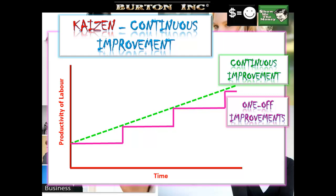Traditional quality control improvements came in single steps — something would be introduced in the production process, perhaps a better machine, and that better machine would improve the quality of the final good. Traditional one-off improvements led to increased productivity of labour over time. Kaizen, by contrast, is all about continuous improvement — those small incremental gains by workers increasing their productivity. This Kaizen continuous improvement diagram is a really good one to include in your IB Business and Management exams.